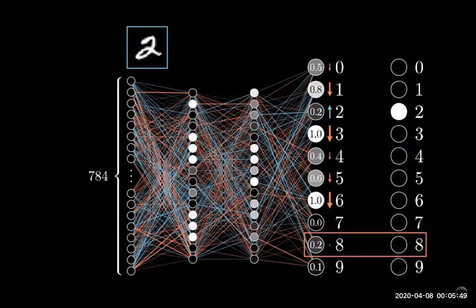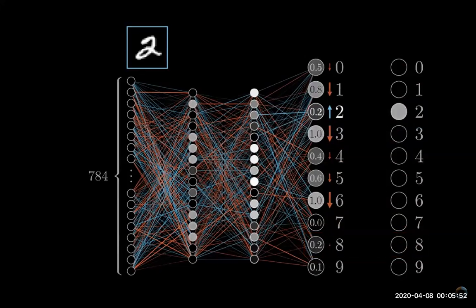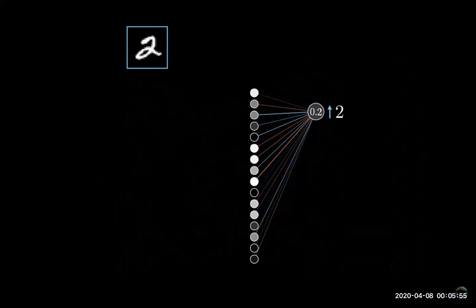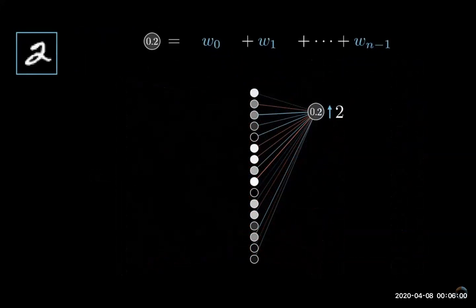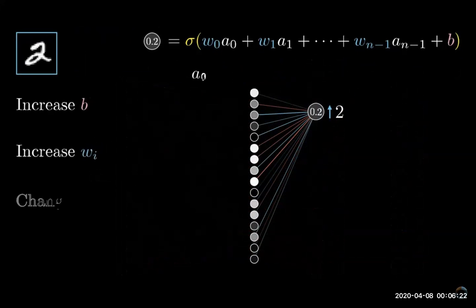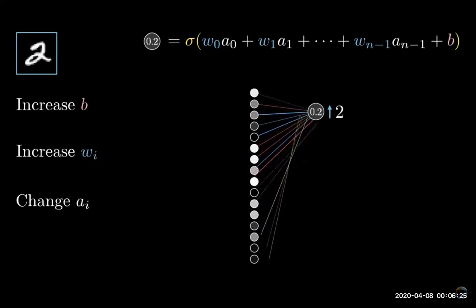Moreover, the sizes of these nudges should be proportional to how far away each current value is from its target value. Zooming in further, let's focus just on this one neuron whose activation we wish to increase. Remember that activation is defined as a certain weighted sum of all the activations in the previous layer plus a bias, which has all been plugged into something like the sigmoid squishification function or a ReLU.